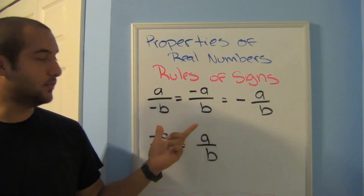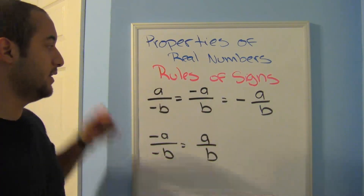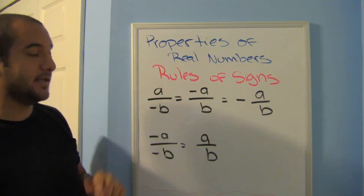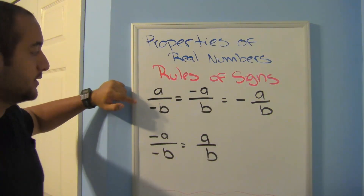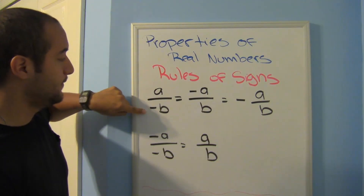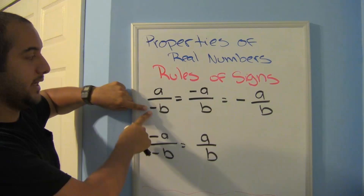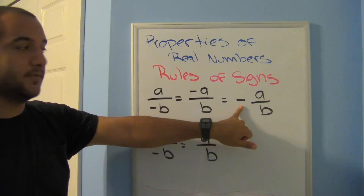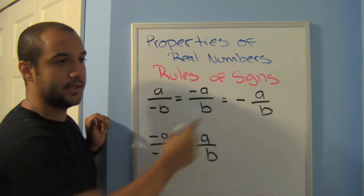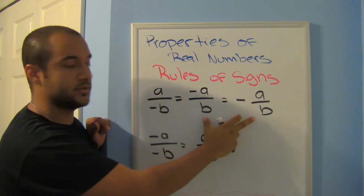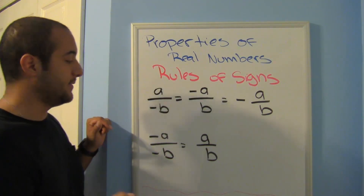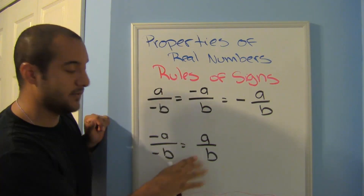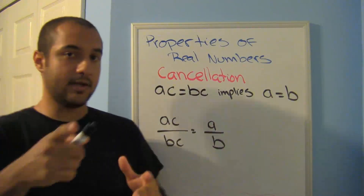For division, the rules are pretty much the same as multiplication. A positive divided by a negative stays negative. We never leave an answer with a negative in the denominator — write the negative in the numerator instead, and those two forms are equal. A negative divided by a negative gives a positive answer — those negatives cancel out.